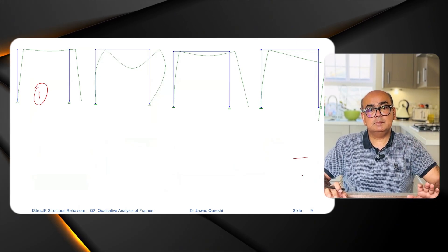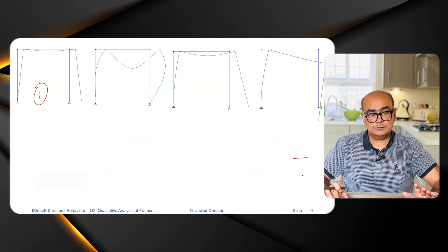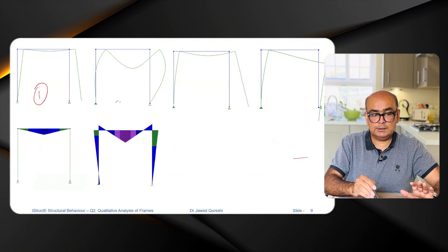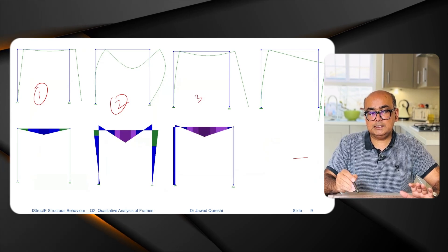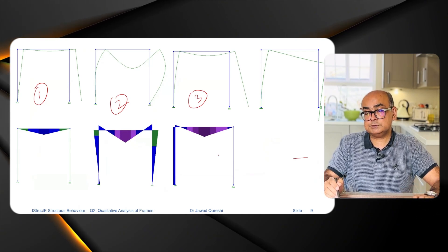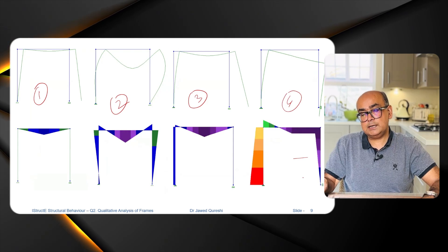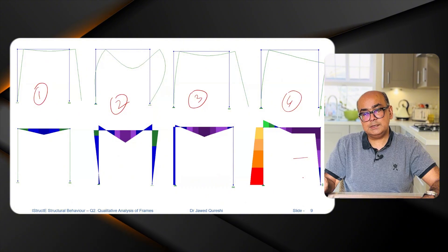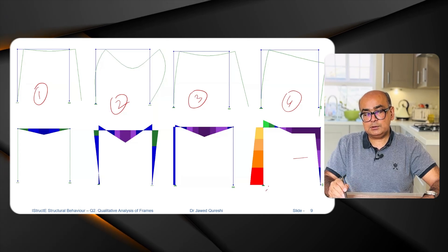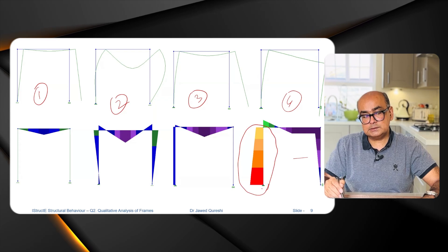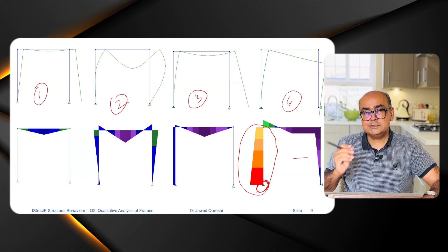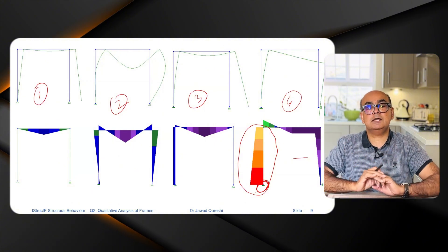To sum up: for the first case, bending happens only in the beam, giving us that simple bending moment diagram. For the second case, bending happens in both columns and the beam. For the third case, bending happens in the left column and the beam. For the fourth case, you have the bending moment diagram with significant moment in the left column. The design implication for the fourth case is that you really have to design the left column to handle this large bending moment, and the support must be designed to take that huge moment.